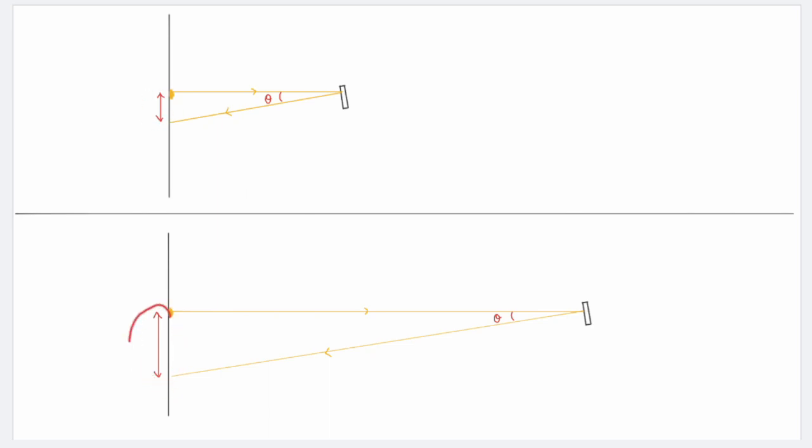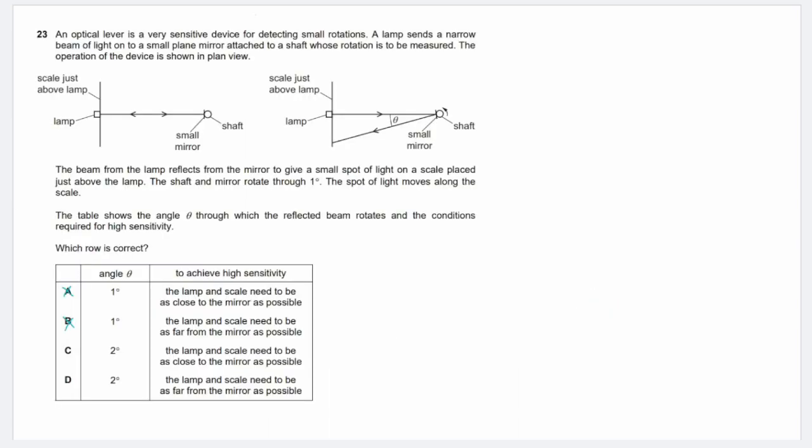And since this one has a larger distance, we can measure it more accurately. Or we can still measure a smaller value of angle theta, as long as the distance here can still be big enough to be measured using a ruler. So we can clearly see that in the second case, this will result in a higher sensitivity, which involves a larger distance between the lamp and the mirror. And that is why to achieve higher sensitivity, we should maximize the distance. In other words, the lamp and the mirror should be as far away from each other as possible. And hence, the answer is supposed to be D.